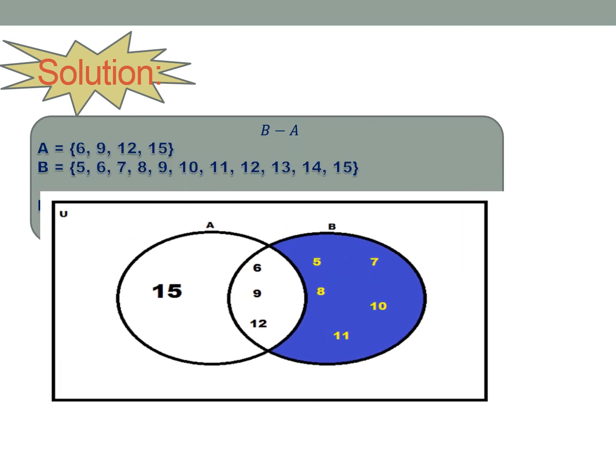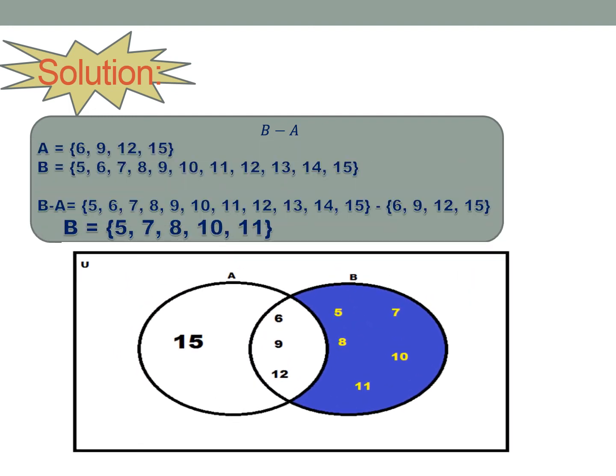So we have here a Venn diagram, where set B is the shaded part. So B minus A is shaded.